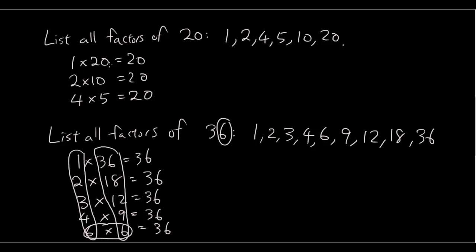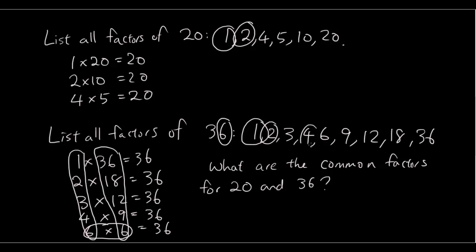Okay, so remember that we have factors of 20 and we have factors of 36. So now if the question says, what are the common factors for 20 and 36? So you can see that you both have 1. I'm going to circle the factors that are in both lists. So 2 is in both, 4 is in both, and that's it. So 1, 2 and 4.